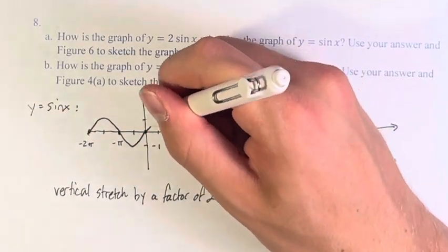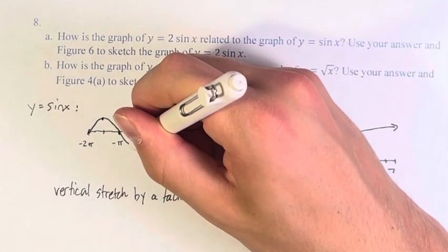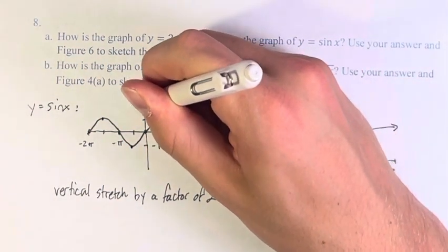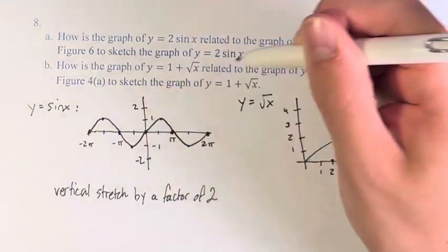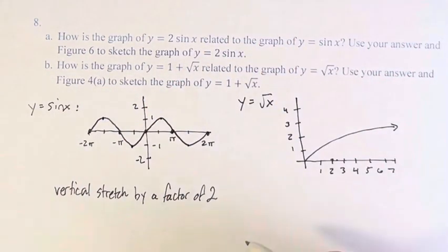And the peaks, right, here at 1, here at negative 1, here at 1, here at negative 1, are going to be at 2 and negative 2, and then everything else can sort of fit in between it.